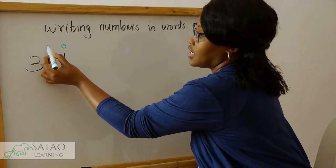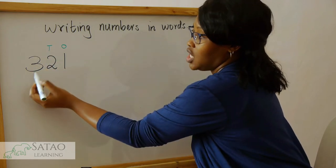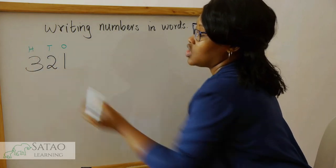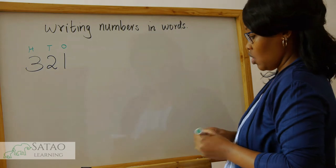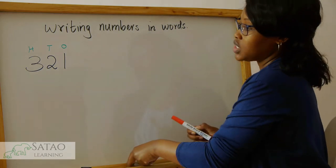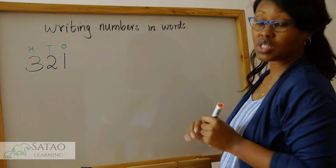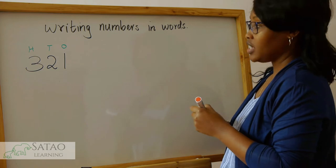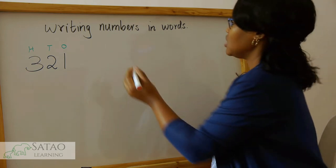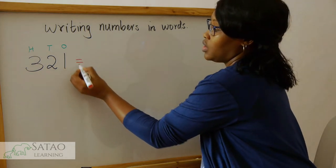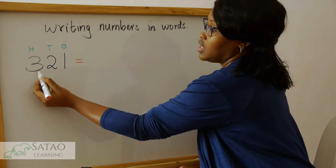Once you've looked at the number and thought about the different place values, now we can write the number in words. So this number in words will be: